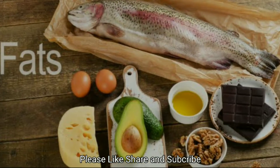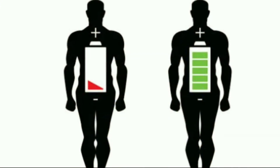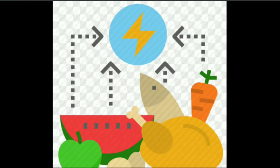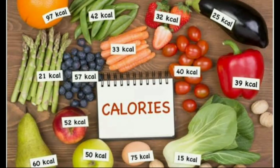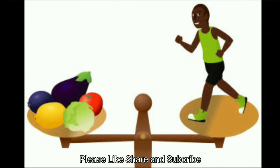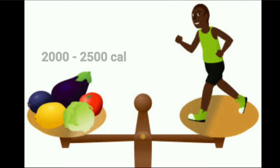Fats. Some part of our energy requirement is also fulfilled by fatty foods such as oil, ghee, and butter. We get energy in the form of heat from the food we eat. Heat is measured in kilocalories, so the energy in food items is also measured in kilocalories. Children of growing age need approximately 2000 to 2500 calories from the food they eat.